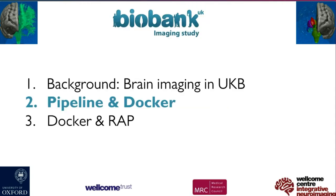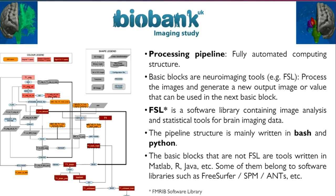The processing pipeline is a fully automated computing structure. The basic building blocks are neuroimaging tools — mostly FSL in our case. These tools process the images and generate new images or values used in subsequent steps. FSL is a software library developed at the University of Oxford, mainly for brain imaging analysis and statistics. The pipeline is written in Bash and Python. Most blocks are FSL, but some are scripts in other languages — MATLAB or R — plus tools from other software libraries like FreeSurfer, SPM, or ANTs. The pipeline is divided into sections according to CPU and GPU needs.